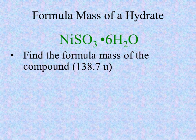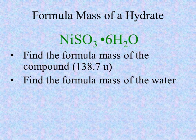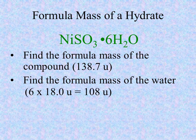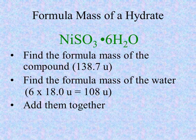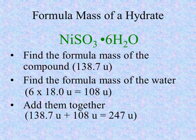In this case, the nickel-2 sulfite has a formula mass of 138.7 atomic mass units. Water typically has a mass of 18.0 atomic mass units, but there are six of them, so we have to multiply 18.0 times 6, which gives us 108 atomic mass units. When we sum these two together, we get the formula mass for the nickel-2 sulfite hexahydrate, being 247 atomic mass units with proper significant figures.